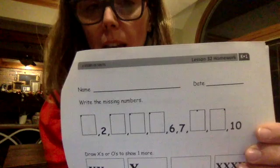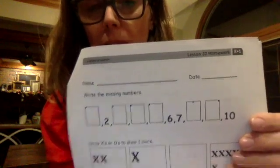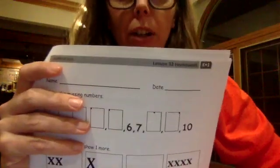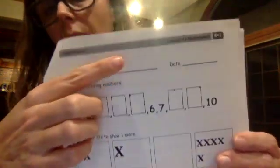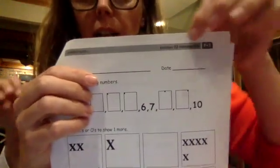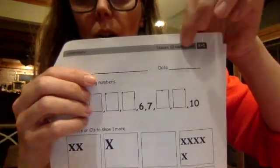Hi, kindergarteners. We are in lesson 32. So I need you to find this page in your green books. It's going to be right after that page that we worked on yesterday with the squares that were in a circle and the clouds. So I need you to work together in your group to find lesson 32. You'll see at the top it says lesson 32 homework.